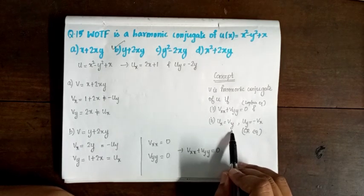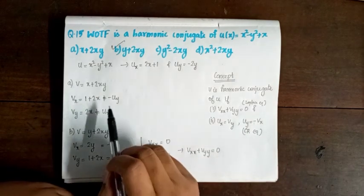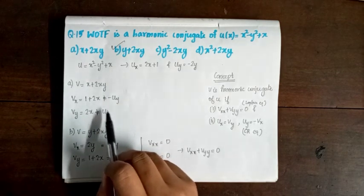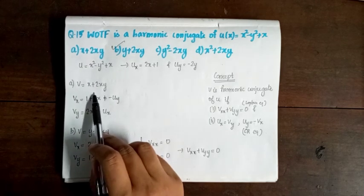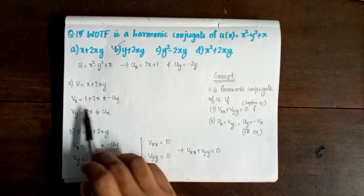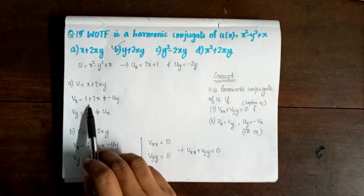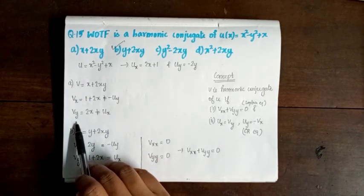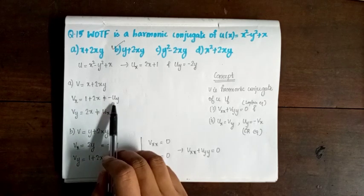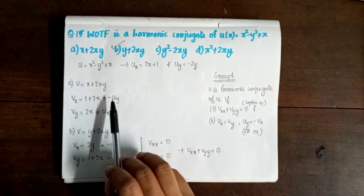The Cauchy-Riemann condition gives ux = vy and uy = -vx. For option A, v = x + 2xy: vx = 1 + 2y and vy = 2x. Since vx ≠ -uy and vy ≠ ux, option A does not satisfy Cauchy-Riemann. So option A is incorrect.